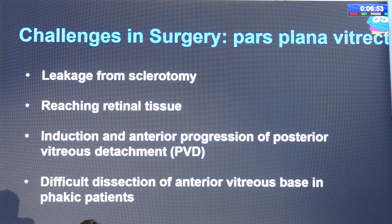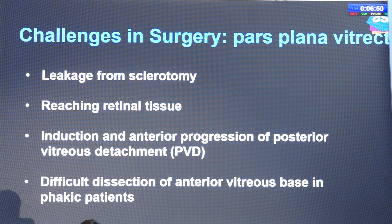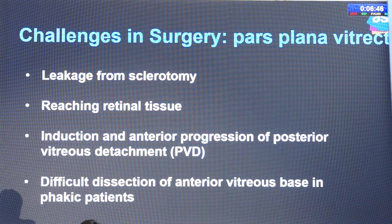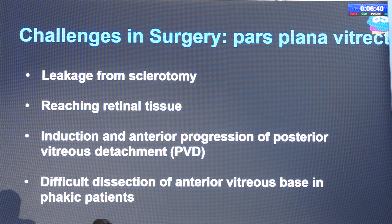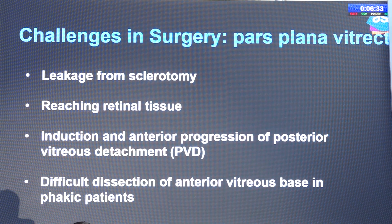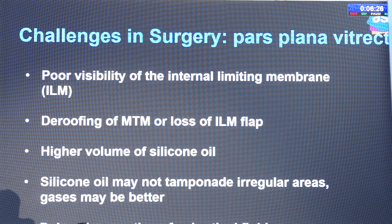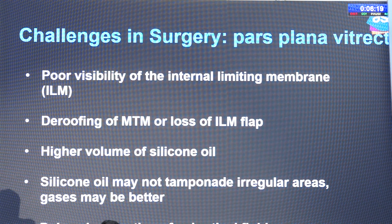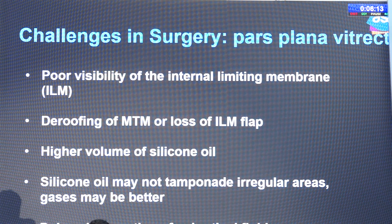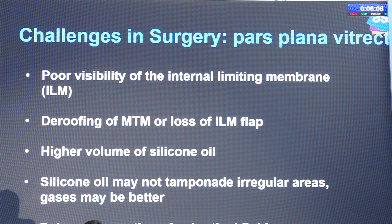During pars plana vitrectomy, the sclerotomies might leak when we remove the cannula, and reaching retinal tissue might be difficult with standard length instruments. Induction of PVD and progression of PVD anteriorly is difficult, and vitreous base dissection might be difficult in young patients. Visibility of the internal limiting membrane is poor, myopic traction maculopathy or foveoschisis may occur, and while operating on macular holes, the ILM flap may get lost. Because the globes are larger, they might need a higher amount of silicone oil, which may not tamponade because of the posterior staphyloma where the areas are irregular.